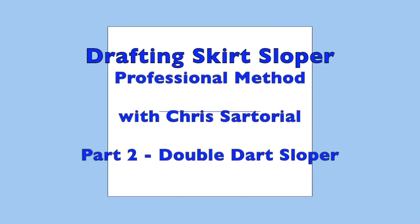This is Chris Sartorial. In this video I'll be demonstrating how to draft a woman's double dart skirt sloper. This sloper has a total of eight darts encircling the waist and is most suitable for a more curvaceous figure where the waist is more than 10 inches smaller than the hip.